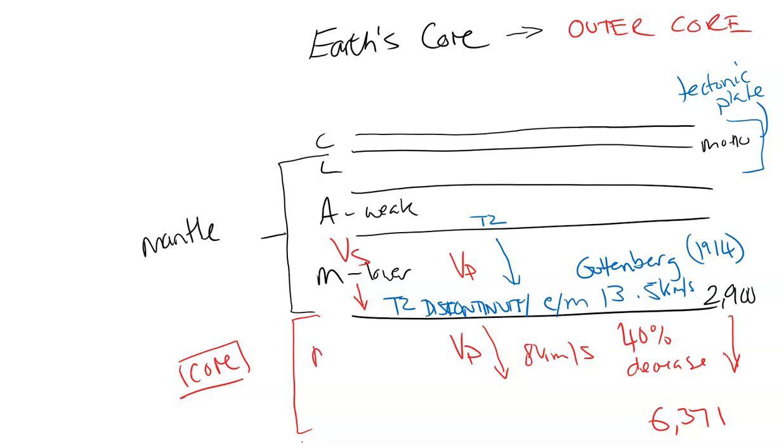He deduced that there was a definite change in material in which these waves are going through. And from that, we deduced that this area is molten, and it goes down to a possible 5,100 kilometers, where again.